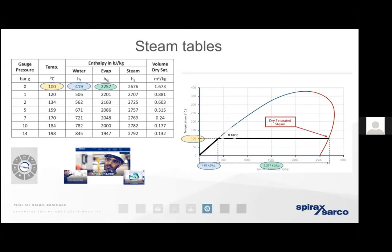In other words, if we put a kilogram of water into a pan boiling on the hob, we know water boils at 100 degrees at atmospheric conditions. To bring that water up to boiling point, it needs to contain 419 kilojoules of energy — that's 4.19 specific heat capacity multiplied by 100 degrees. So when the water is boiling, it has 419 kilojoules contained within it. We refer to that as the enthalpy of water, or the sensible heat.